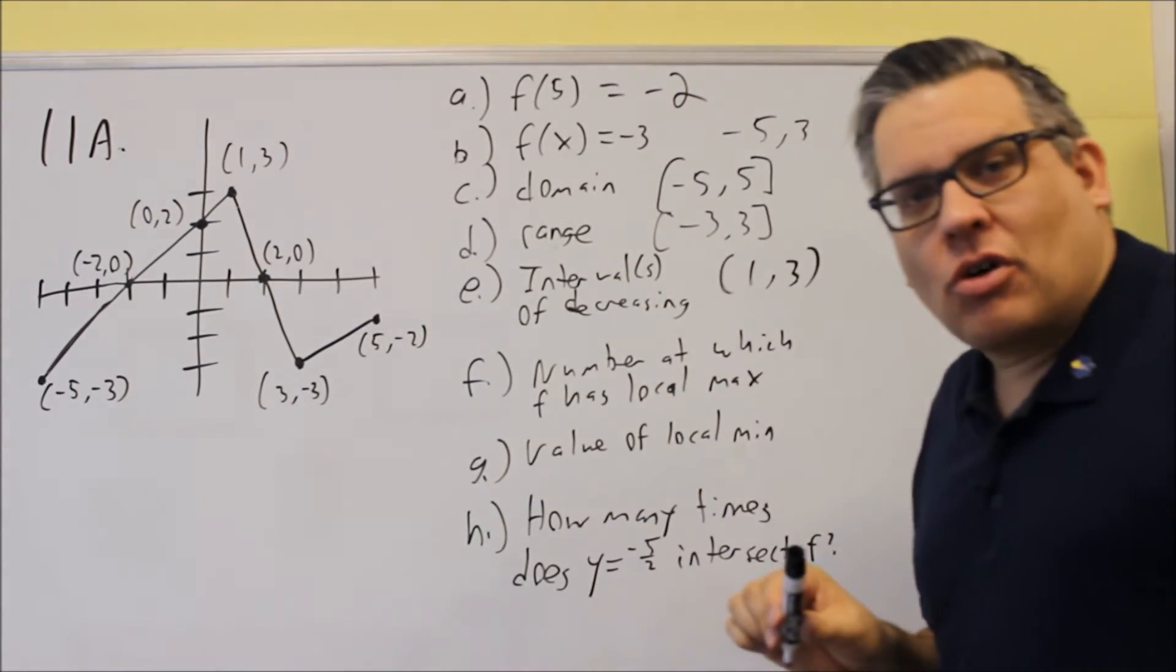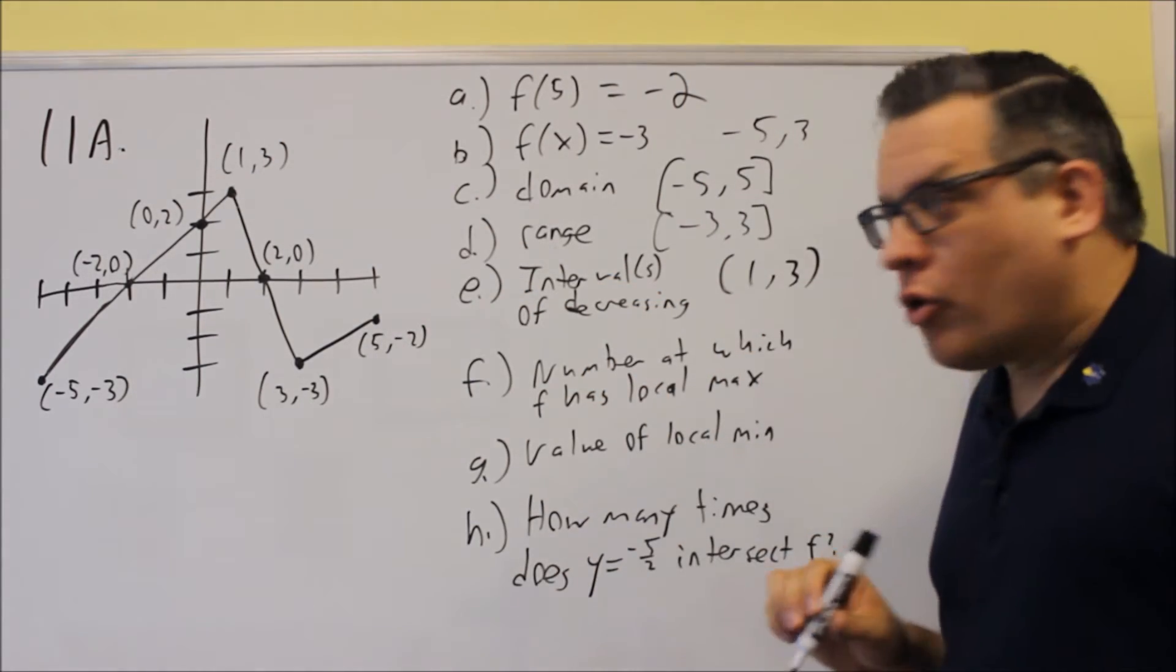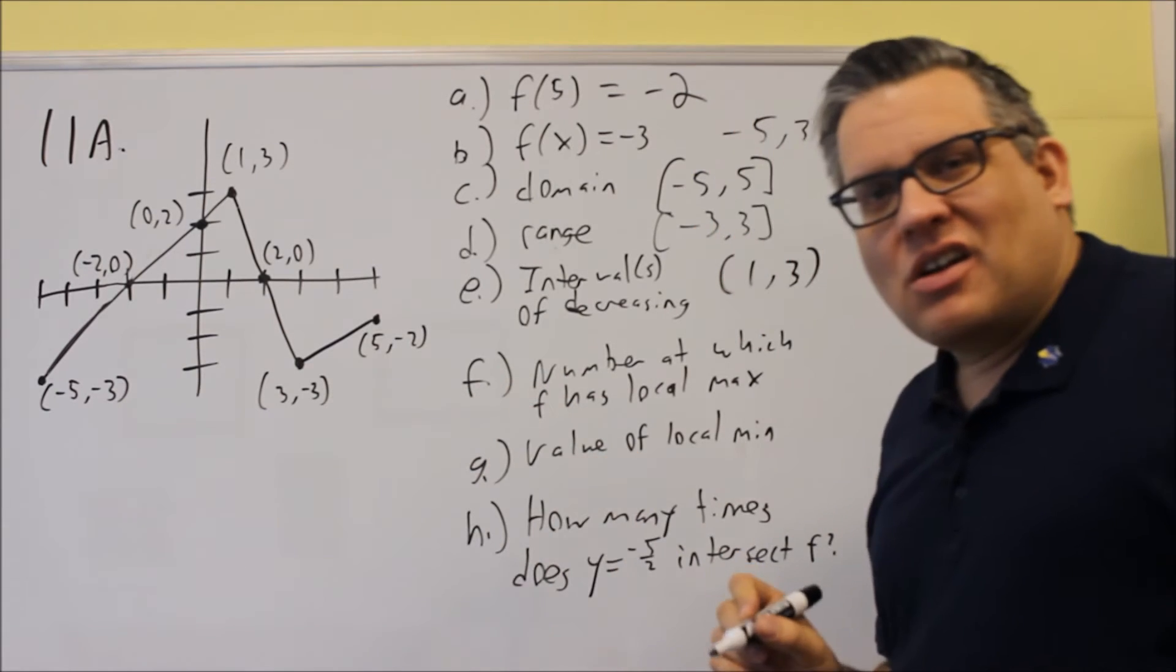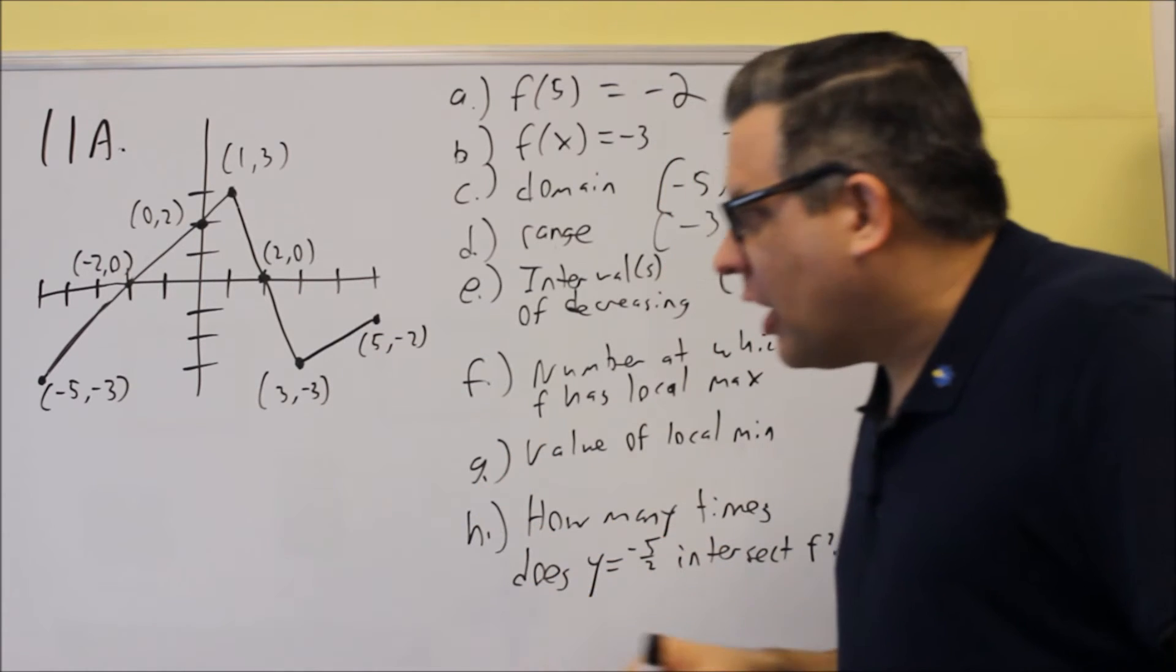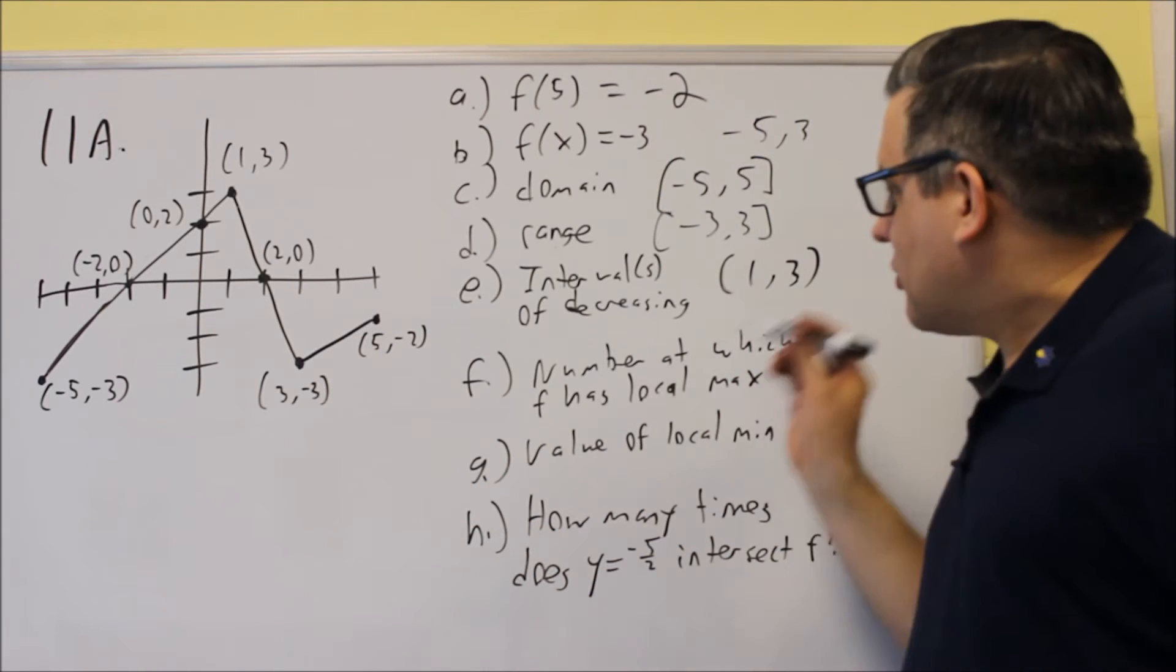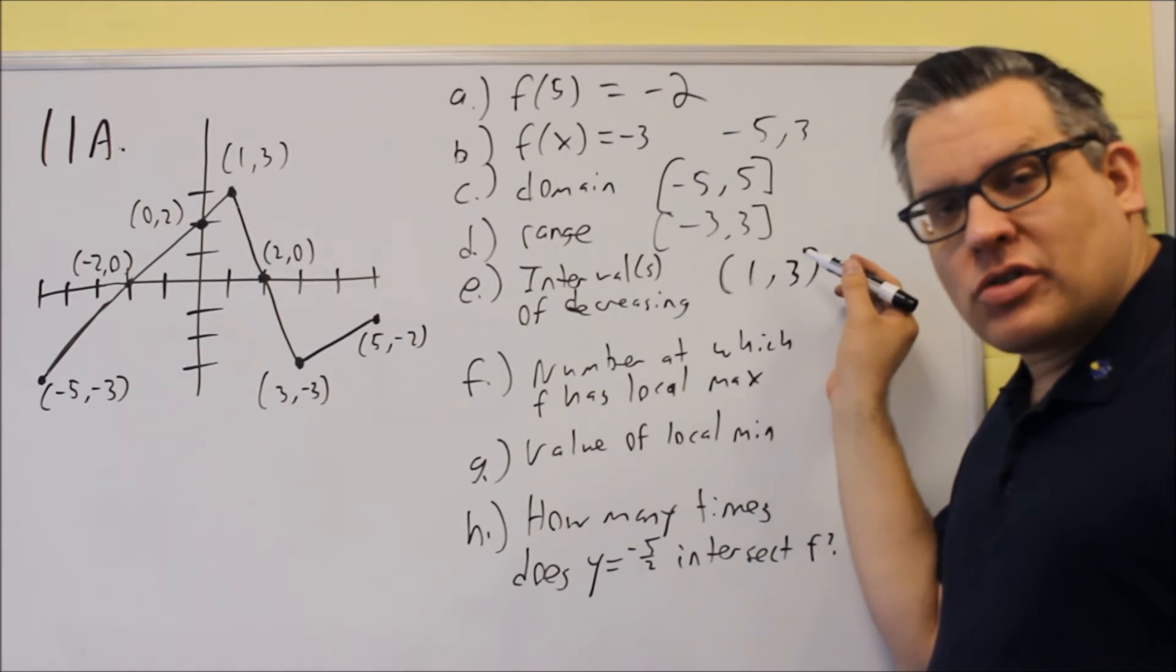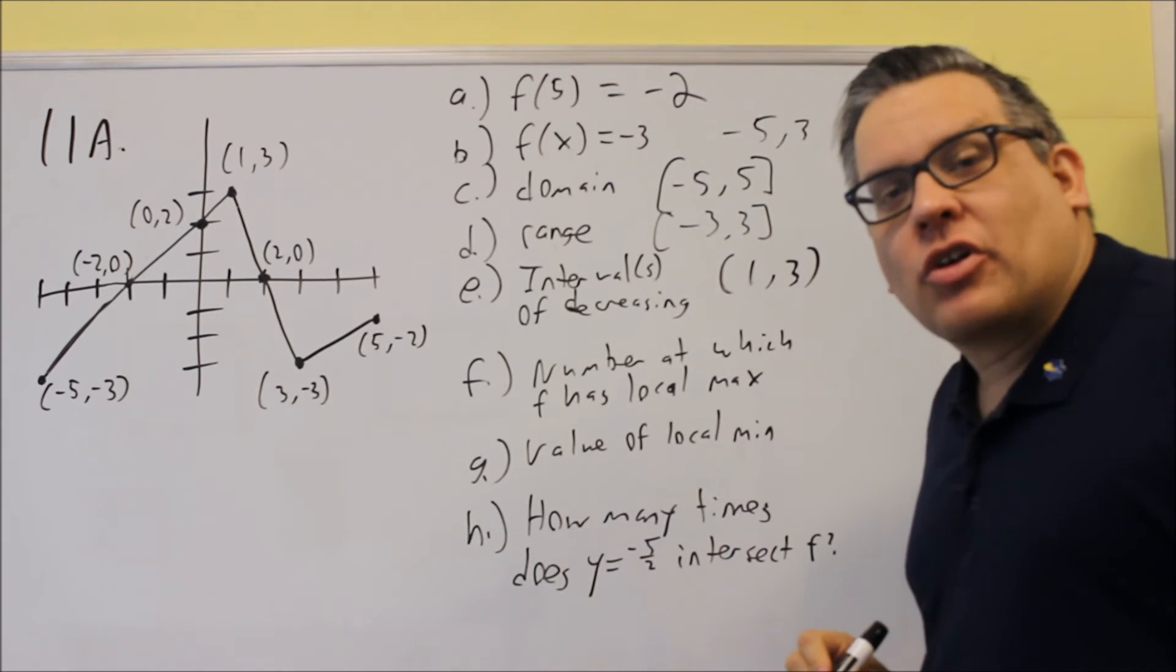It's kind of constant there, so that's why we don't actually include the endpoints because at the endpoints, technically they're not increasing or decreasing. That's actually a place where nothing's happening, where it's constant. So for this case, we're always going to use parentheses for the intervals of increasing and decreasing.